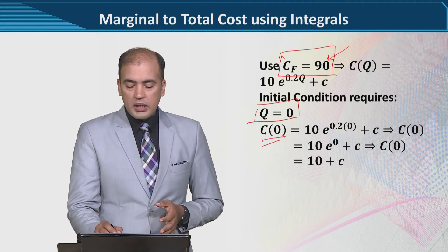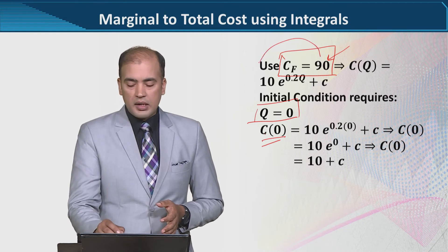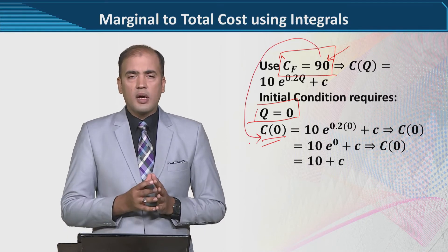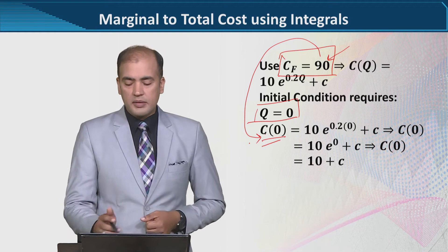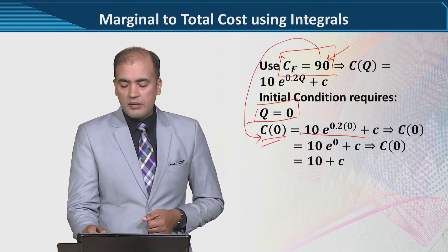So, we can use C(0) = 90, that is, cost when the output is zero, that is the fixed cost. Right hand side, as you can see, we can do that.